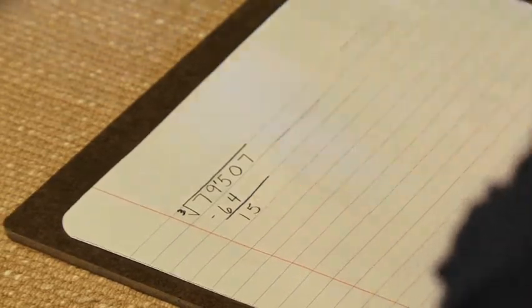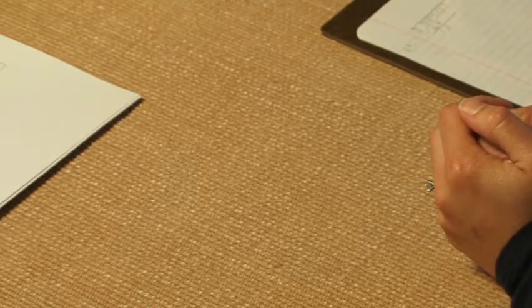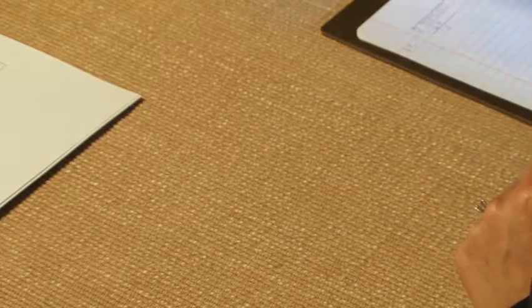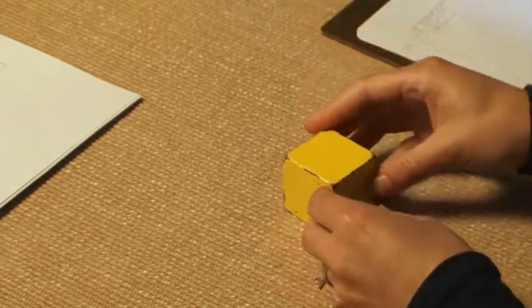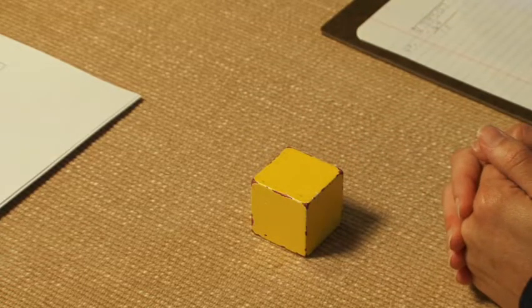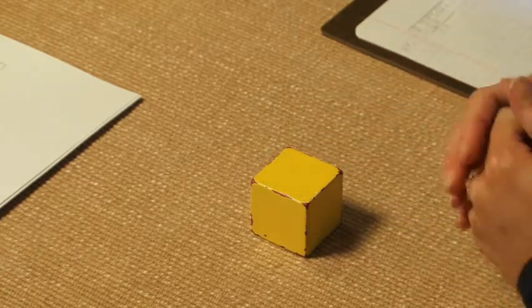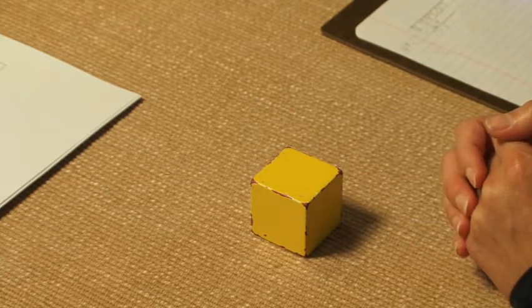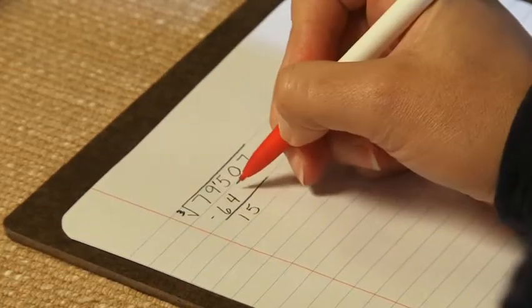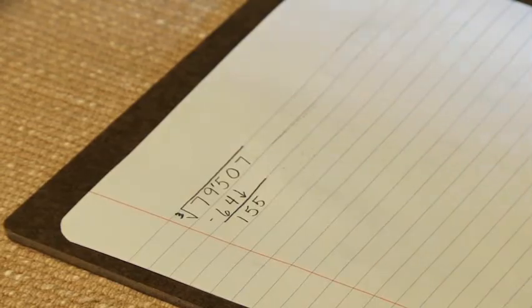I have a remainder of 15, and I'm going to start by using the four cube. This will represent our four cube of 64. We're going to be bringing down another digit, so we have 155.